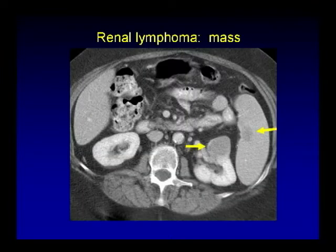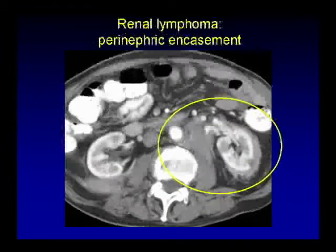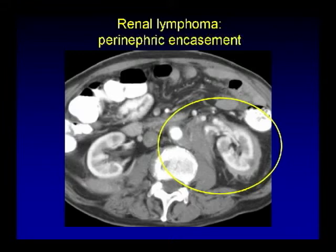Here's a solid left renal mass — also notice the mass in the spleen — renal lymphoma in this case. The next case shows infiltrated bilateral renal masses with retroperitoneal adenopathy, another presentation of renal lymphoma. Here you see conglomerate retroperitoneal adenopathy that extends to encase the left kidney — this is another presentation of renal lymphoma with perinephric encasement.